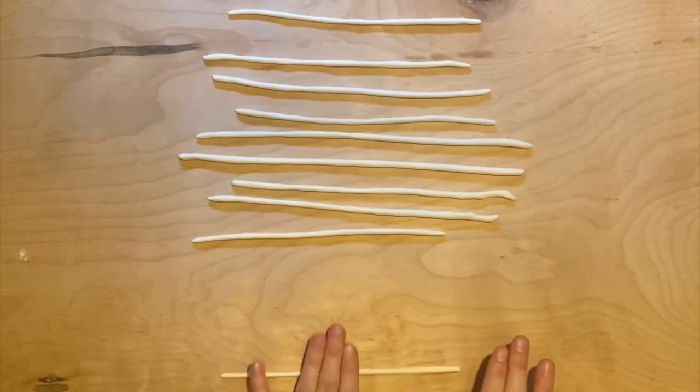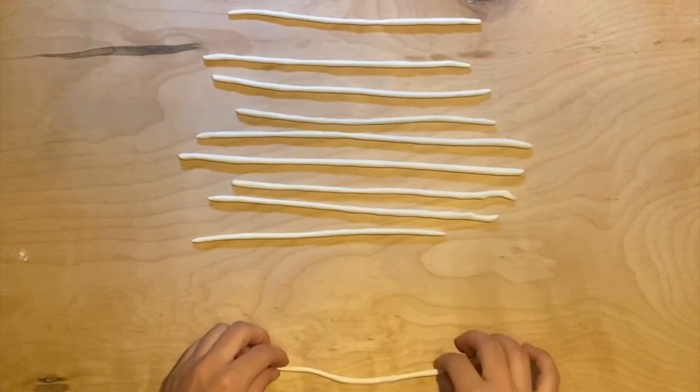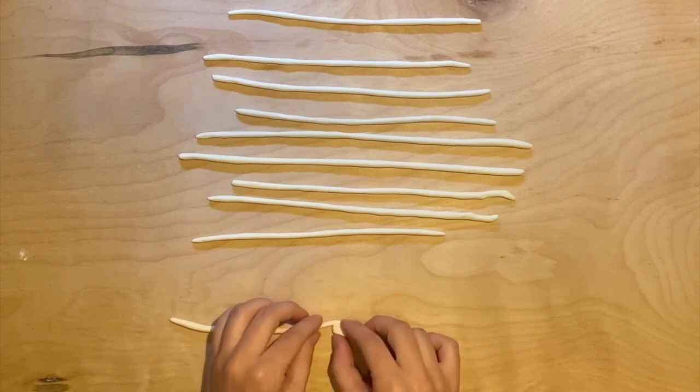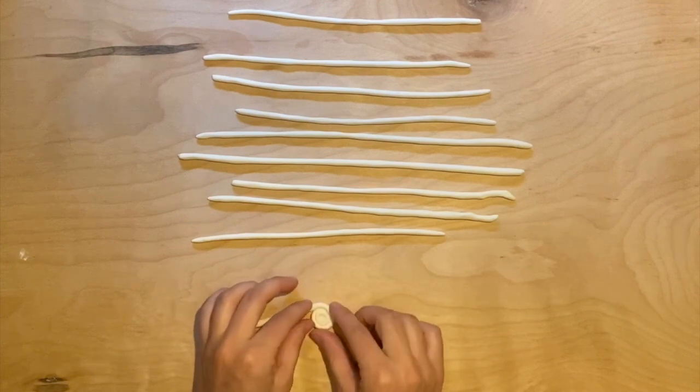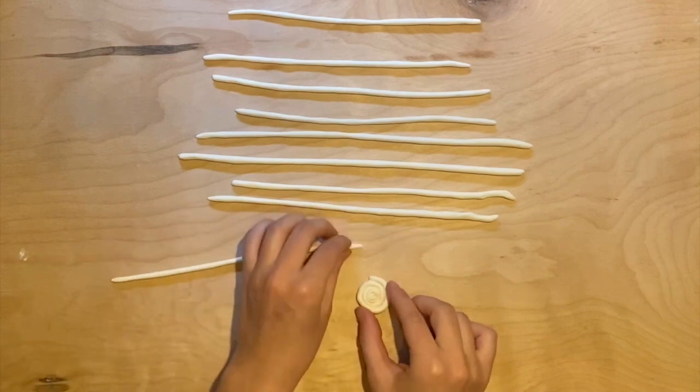we are going to begin by making the base of the coil pot. To do this, spiral a coil around itself until it's about two inches wide.